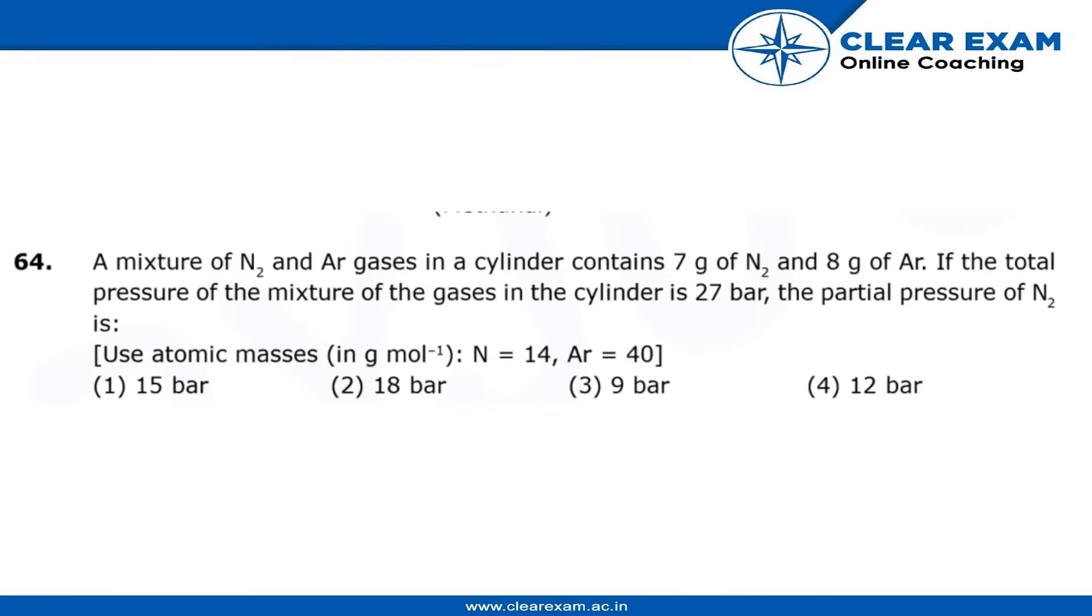In this question, a mixture of N2 and AR gases in a cylinder contains 7g of N2 and 8g of AR. If the total pressure of the mixture of gases in the cylinder is 27 bar, the partial pressure of N2 is what we have to find.